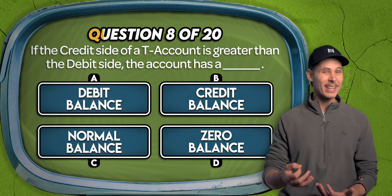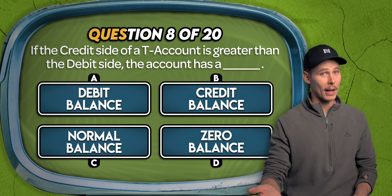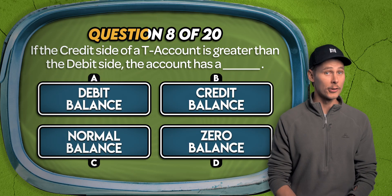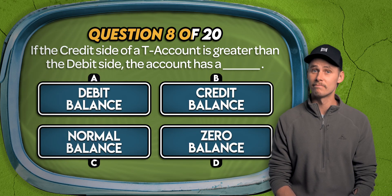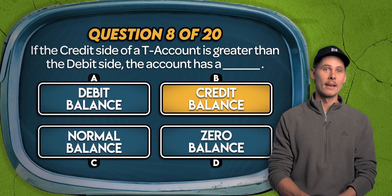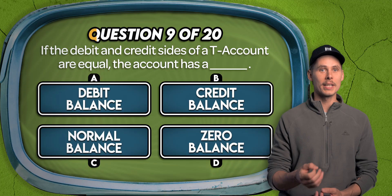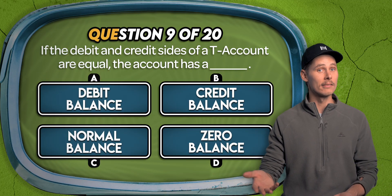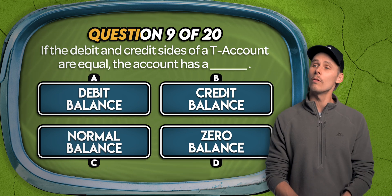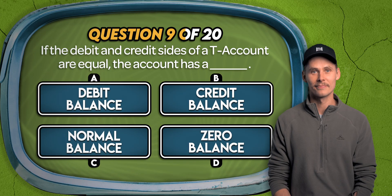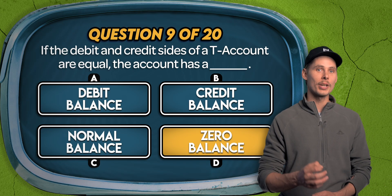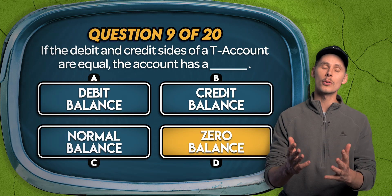Question 8. If the credit side of a T-account is greater than the debit side, the account has: a debit balance, credit balance, normal balance, or zero balance? The answer is of course B — it would have a credit balance. Question 9. If the debit and credit sides of a T-account are equal, the account has: debit balance, credit balance, normal balance, or zero balance? It's D. When total debits and credits are equal, they cancel each other out, leaving the account with a zero balance.